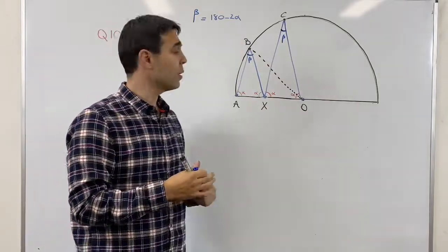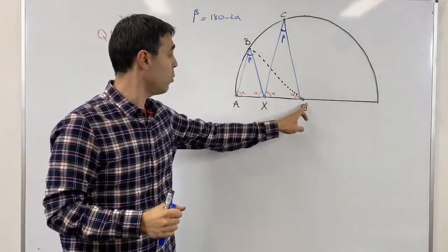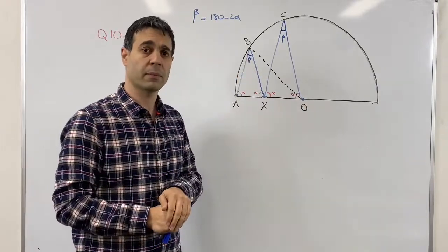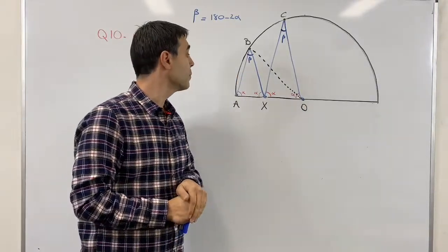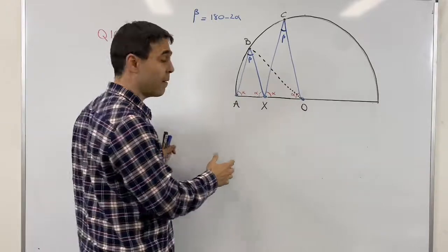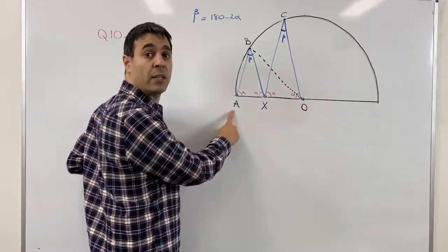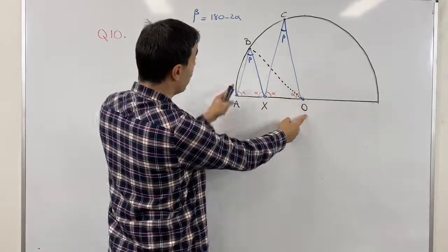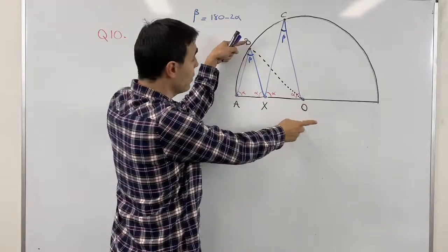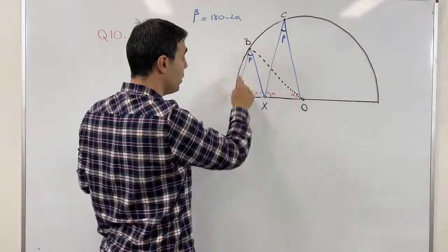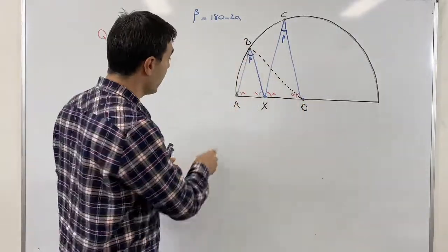Let's take a minute to find it. Why AOB is isosceles? Okay, so as you may have known, OA is the radius of the circle. Again, OB is the radius of the circle. So yeah, OBA is isosceles.